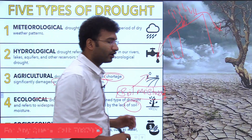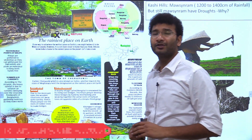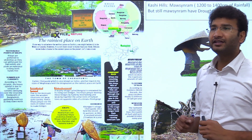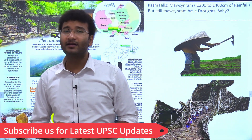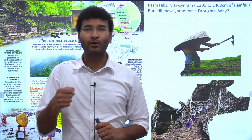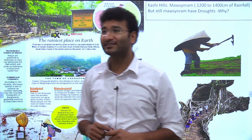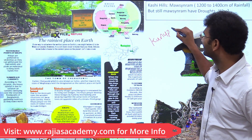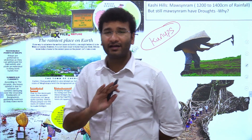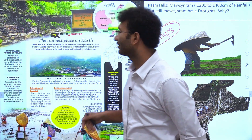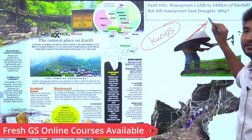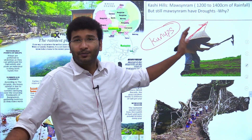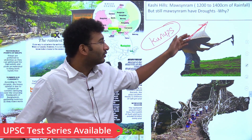From the examination point of view, you also need to understand the lifestyle of people living in this heavy rainfall area. The locals believe umbrellas cannot do justice to that kind of rainfall, so they have developed a local traditional umbrella called Kunup — made of bamboo. This has become an integral part of their traditional culture.